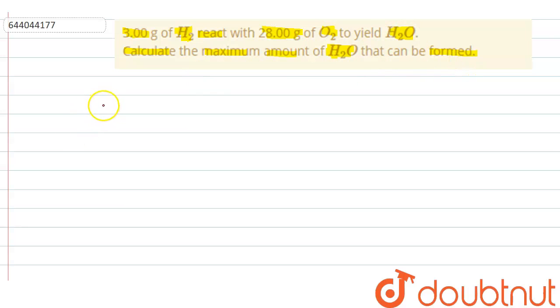So we know that 2 moles of hydrogen combines with 1 mole of oxygen to form 2 moles of H2O. Right. So if we calculate the molar mass...